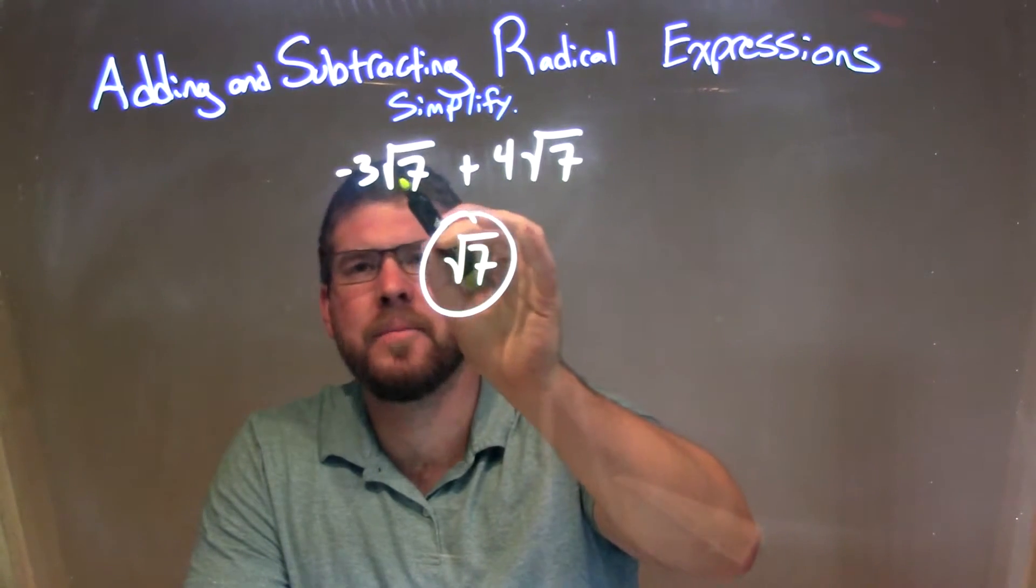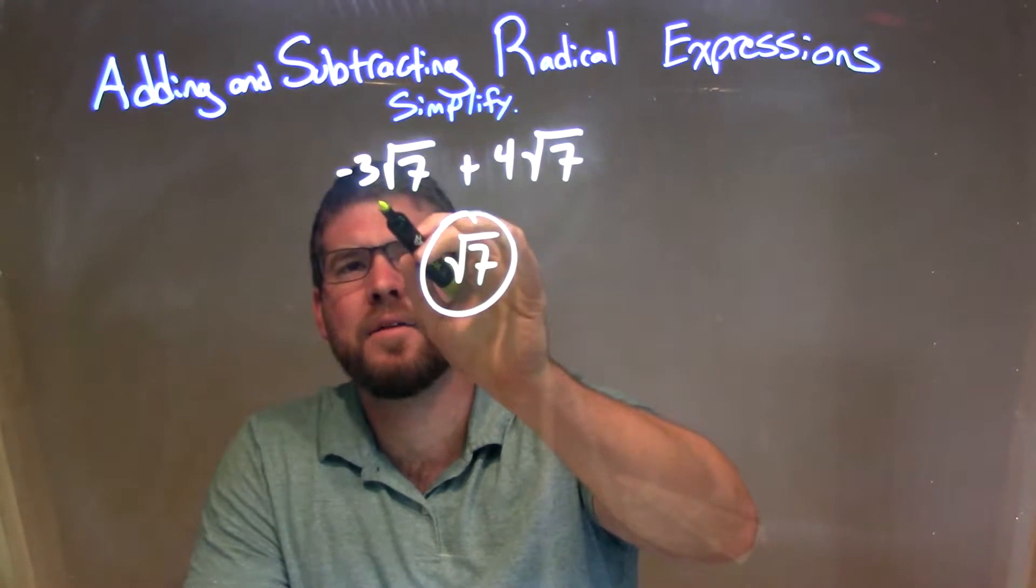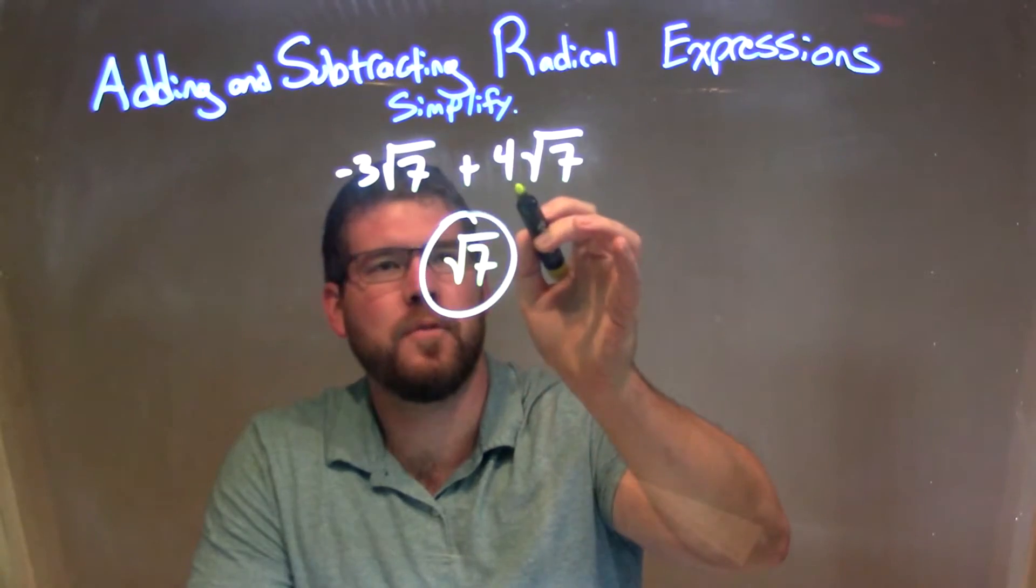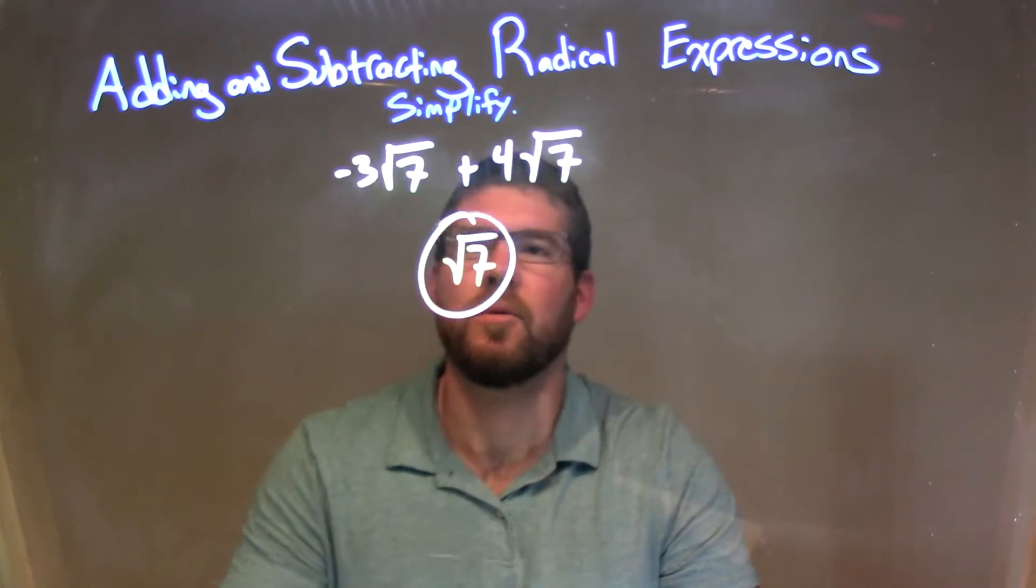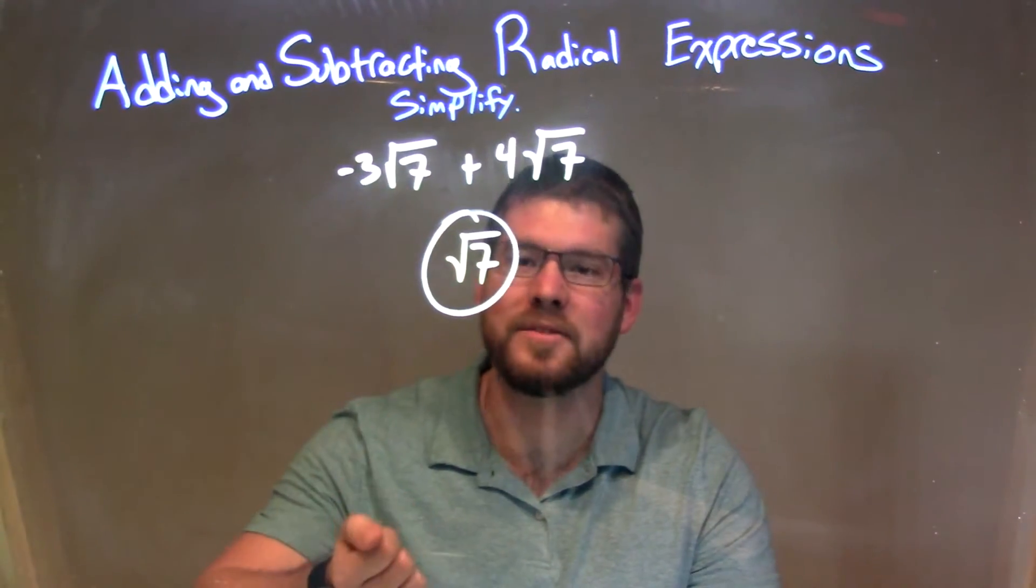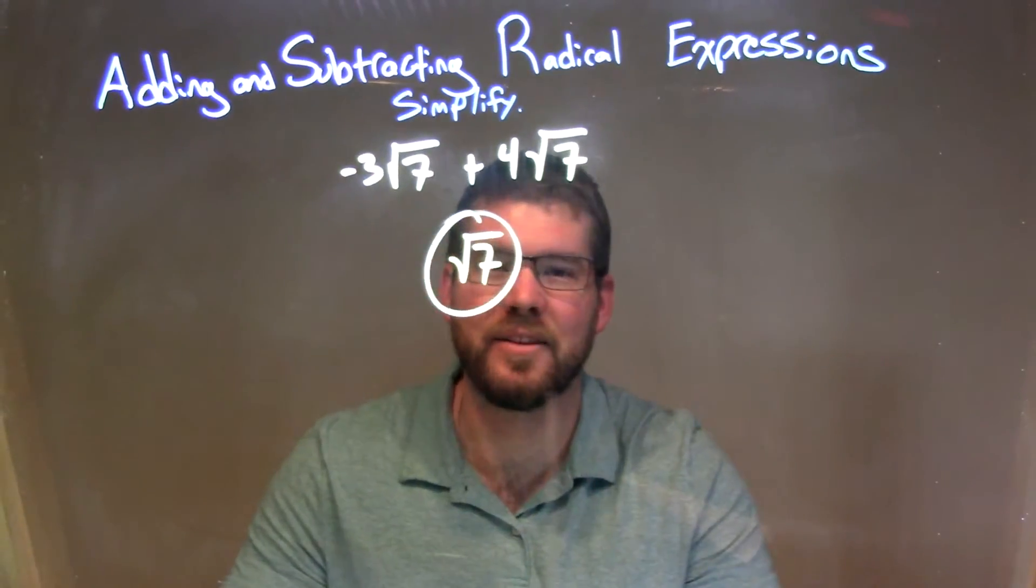If you imagine it this way: we have negative 3 of these square roots of 7, and we have 4 of these square roots of 7. When we combine them, we're left with just 1 square root of 7, and that is our final answer.